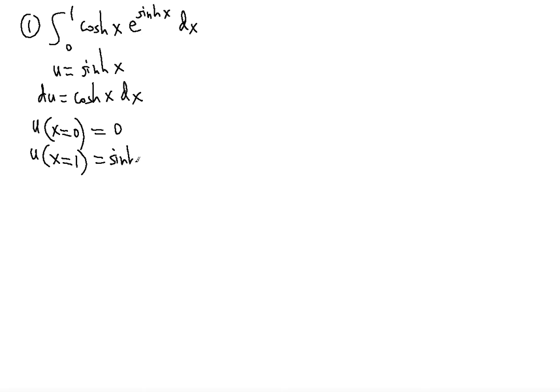So now you're going to have from 0 to sinh 1 because you're changing the variable to u. e to the u and then cosh x dx is du.